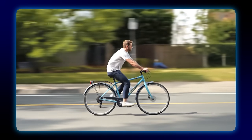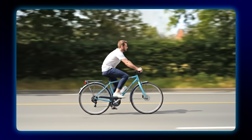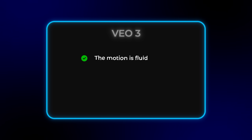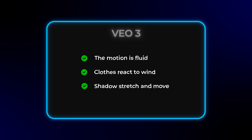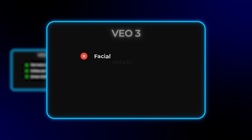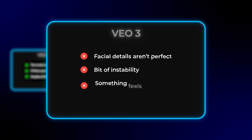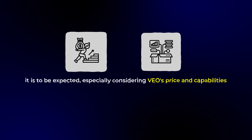Now here's what VO generated. This one is impressive — the motion is fluid and you can see the clothes react to wind. The shadows stretch and move as the bike rolls forward. That said, the facial details aren't perfect. There's a bit of instability and something feels a little off in how the face holds together across the frames. But overall, this is a strong result, especially considering VO's price and capabilities.